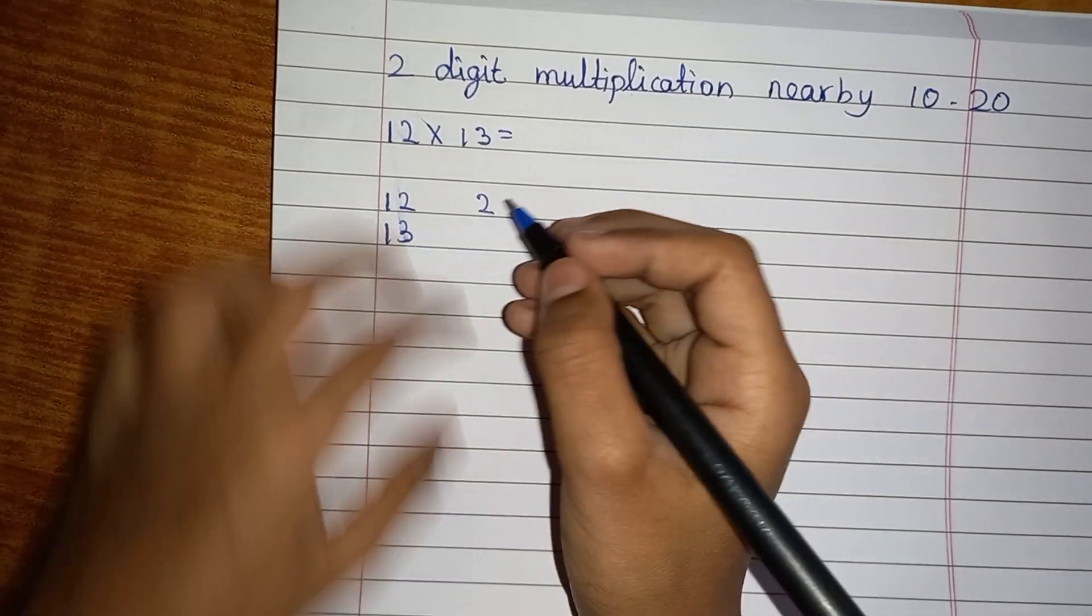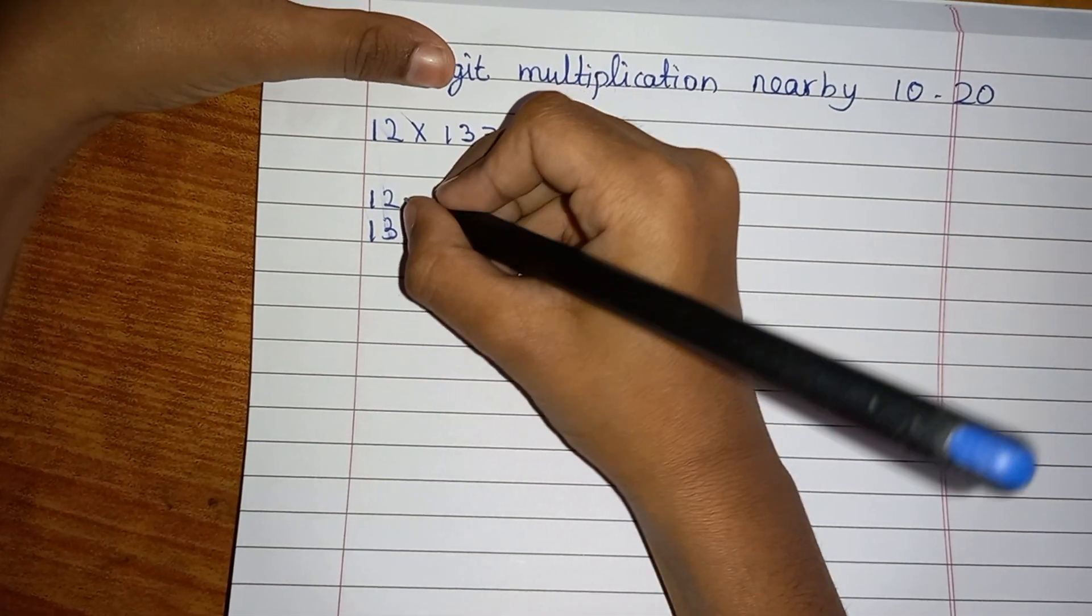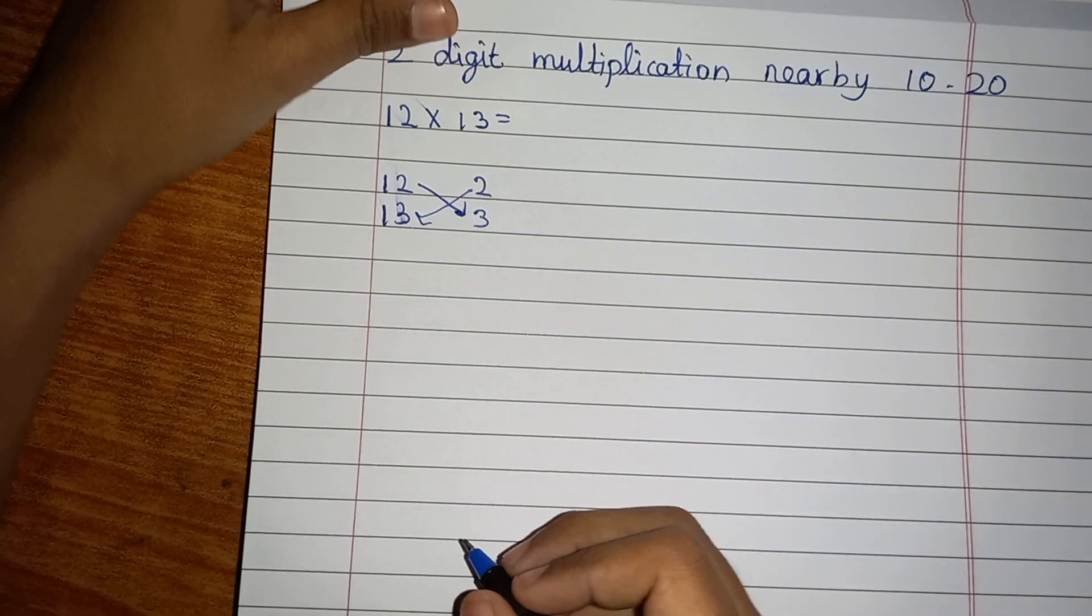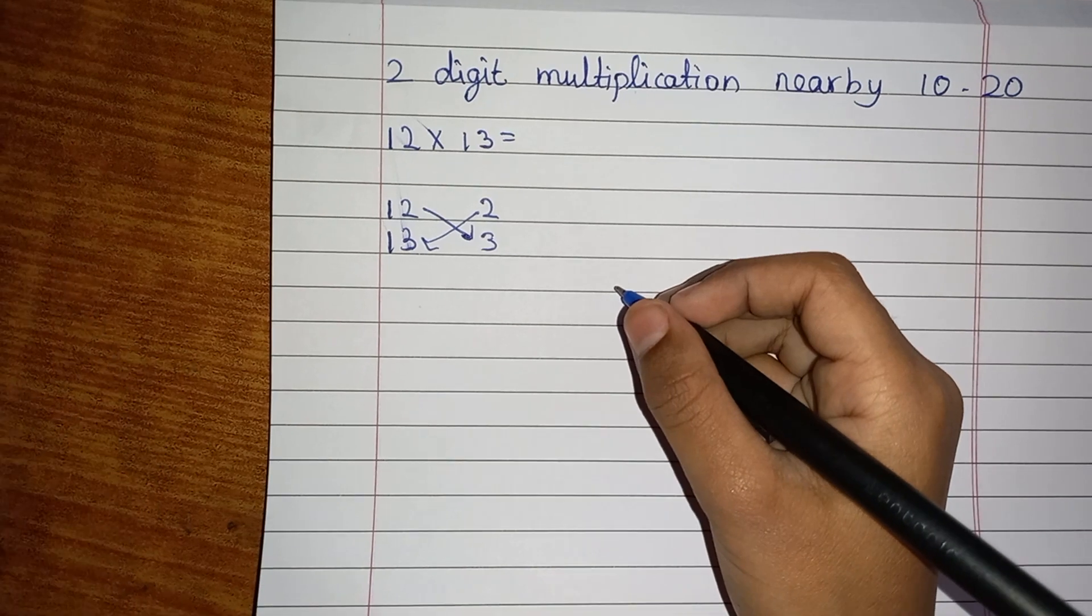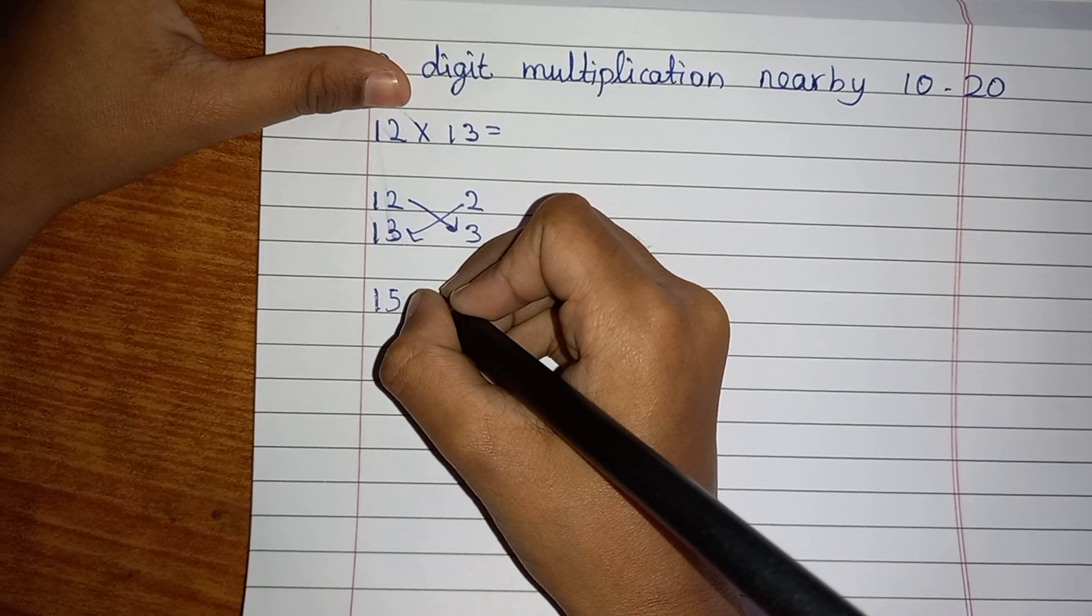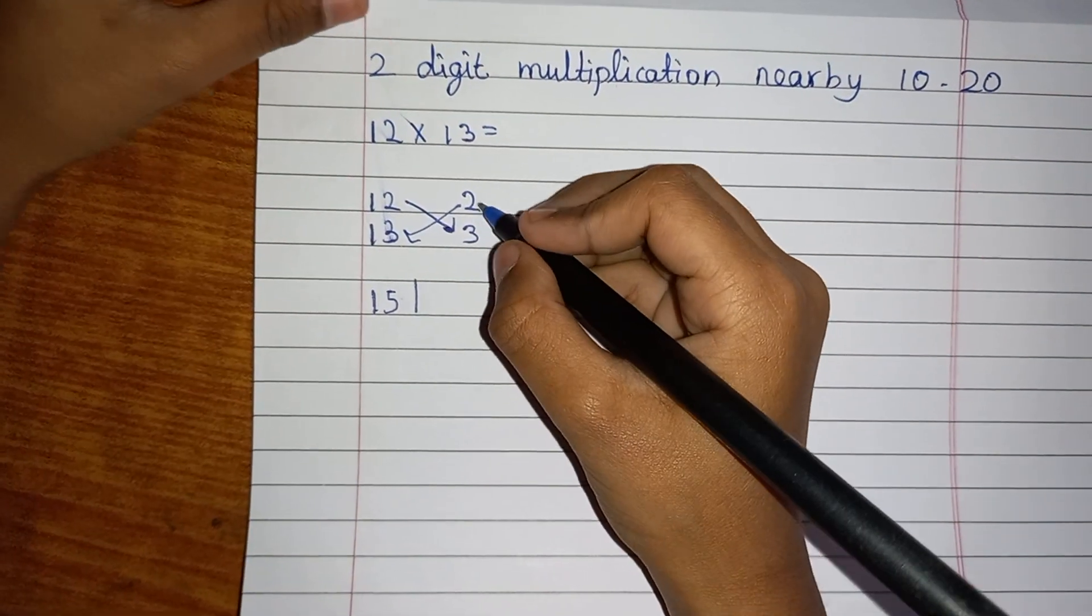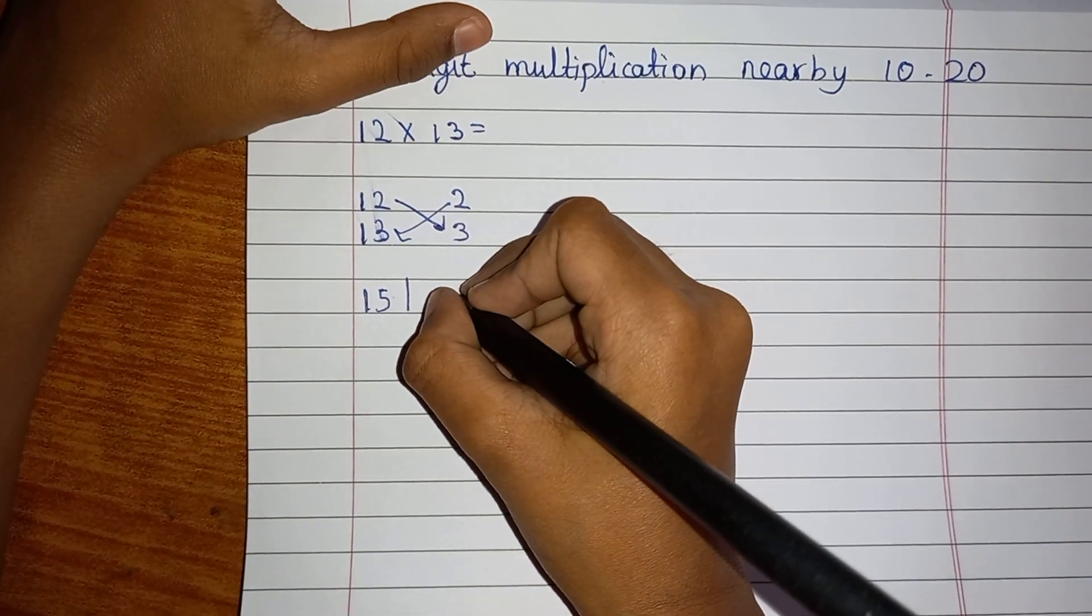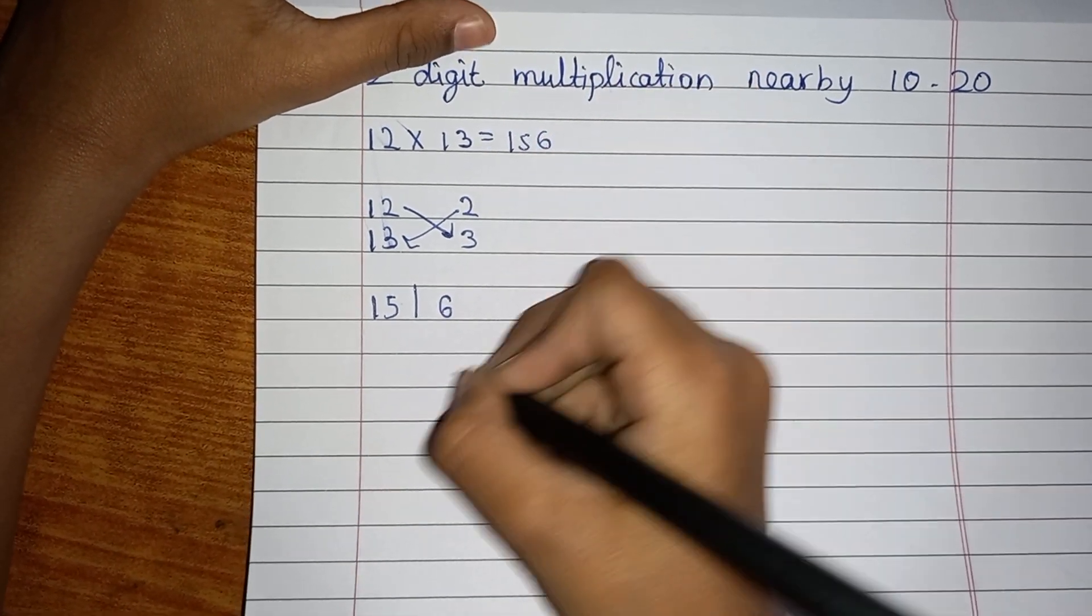And 13 is 3 more, so you have to write the 3 here. Now what you have to do is add the 12 to 3 or add 13 to 2. You will get the same answer which is 15. Then keep a line. Then you have to do 2 multiplied by 3 which is 6, and the answer is 156.